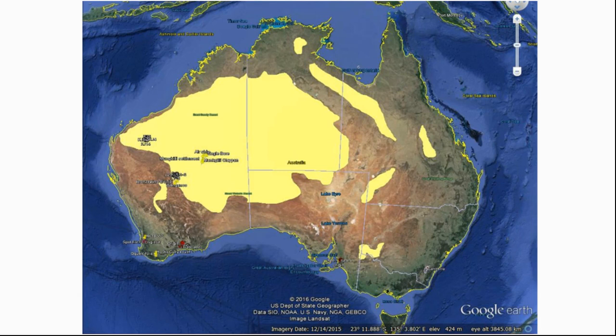As Mike alluded to in his introduction, spinifex grasslands or spinifex fuel is the largest vegetation type or fuel type in the country. It occupies about 27% of the continent. Spinifex occurs in all mainland states, predominantly in Western Australia, Northern Territory and South Australia. While it's a big chunk of our country and the largest fuel type, it doesn't get that much attention from a fire behaviour, fire ecology, or fire management perspective, for the simple reason that it mostly occurs in the remote, fairly sparsely populated parts of the continent.